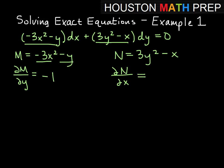Partial of N with respect to x, so again the first term, y is a constant, remember, so we get nothing out of that term. Derivative with negative x there with respect to x is going to give us negative 1. So these are equal to each other, so that means this equation is exact.